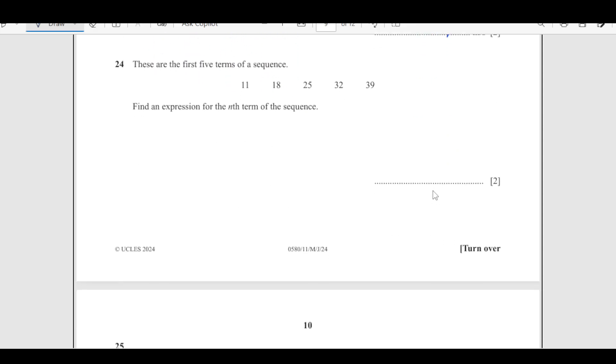Now number 24, there are first 5 terms of the sequence. Here, find an expression for nth term. So our nth term T_n is a plus n minus 1 into d. So as you see, if you add 7, you are going to get the next term. So that means our a, the first term is 11 and d is 7.